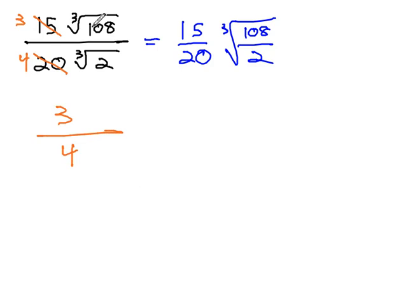Inside the radicals, 108 and 2 are both divisible by 2. 108 divided by 2 is 54, and 2 divided by 2 is 1, and we get the cube root of 54 over 1.